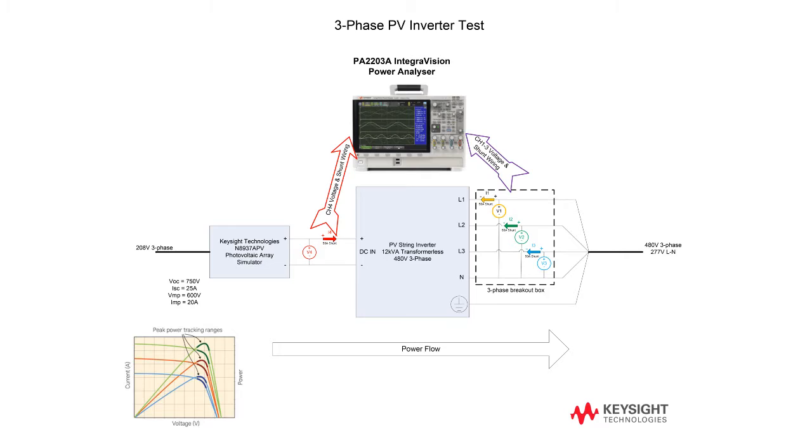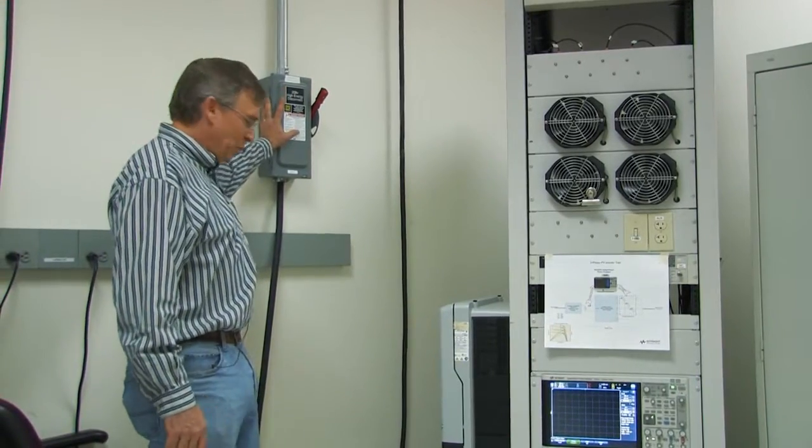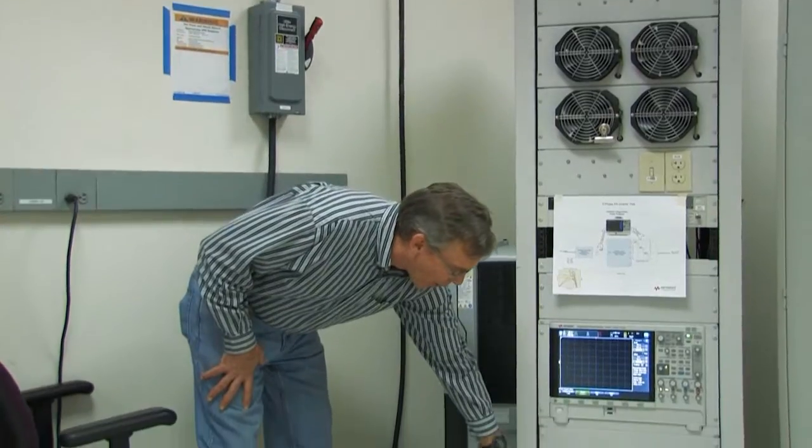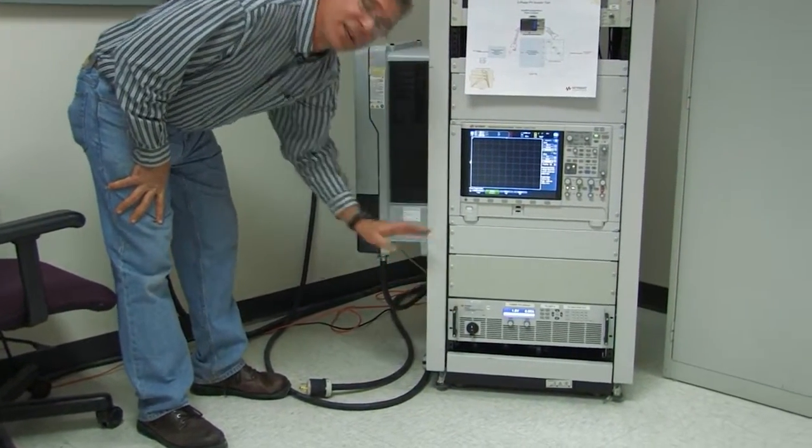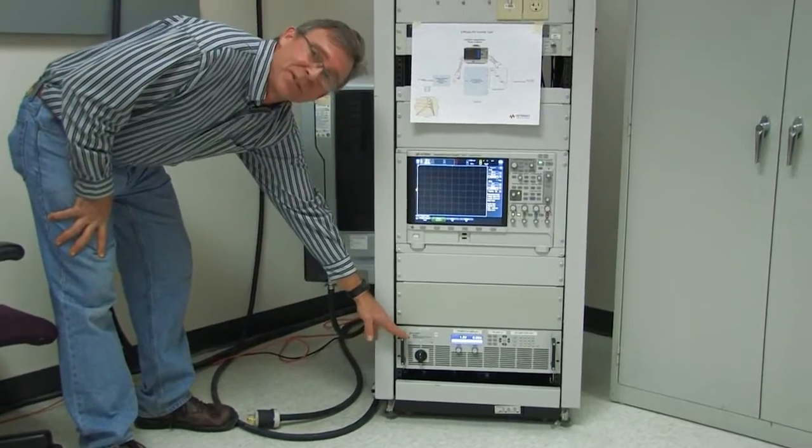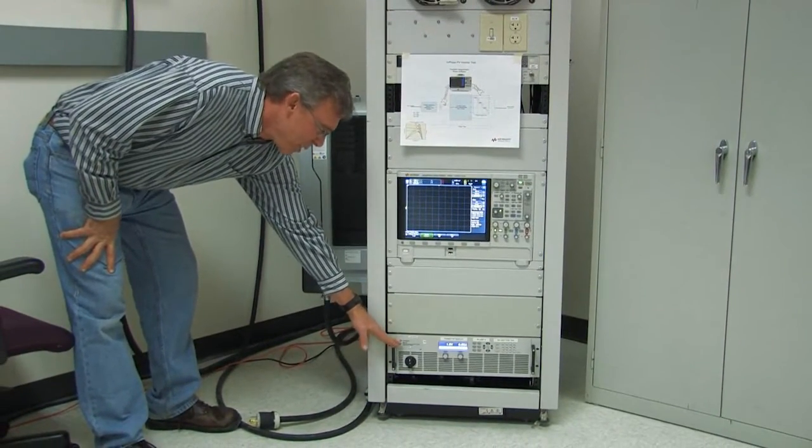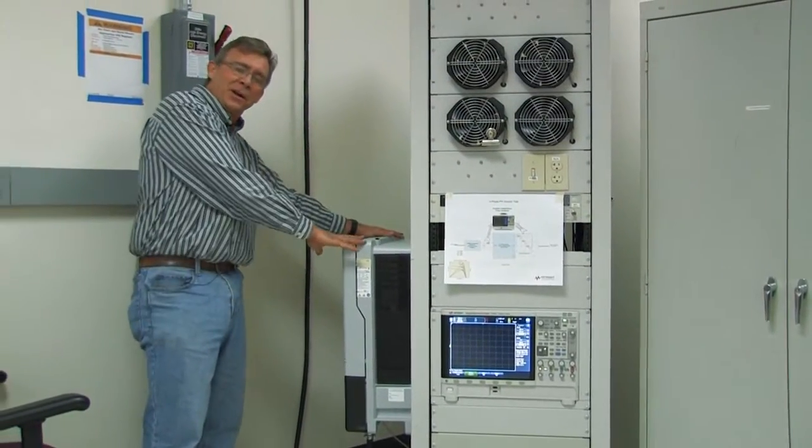I'll now talk about how it's actually wired. Our 208 three-phase input comes into our power supply which does the three-phase AC to DC conversion. The output of the power supply then supplies the input to the inverter mounted here.